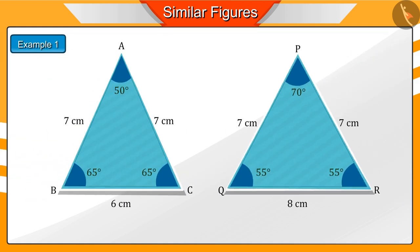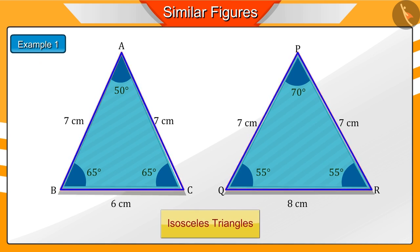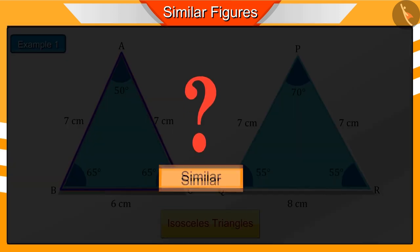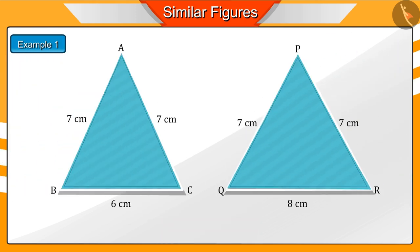Look at these two triangles. What can you tell about them? These are isosceles triangles. Their two sides have equal lengths. These are not congruent because they have different corresponding sides and angles. But are these figures similar? Let's see.